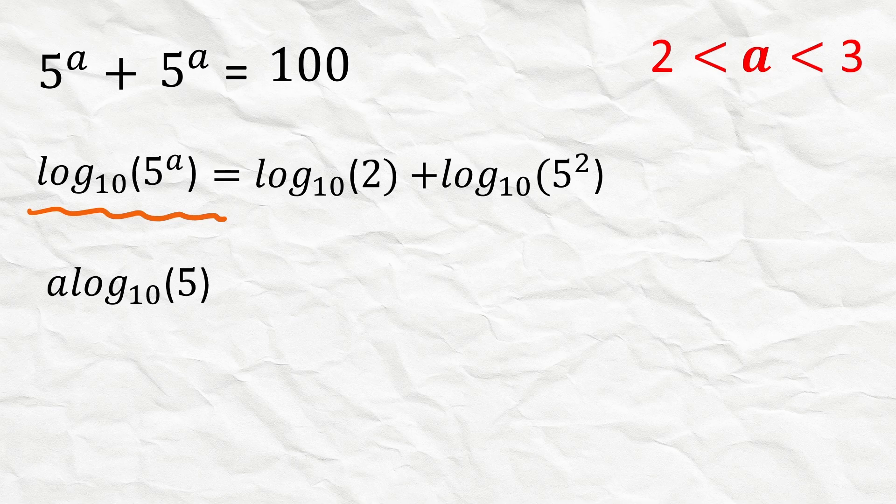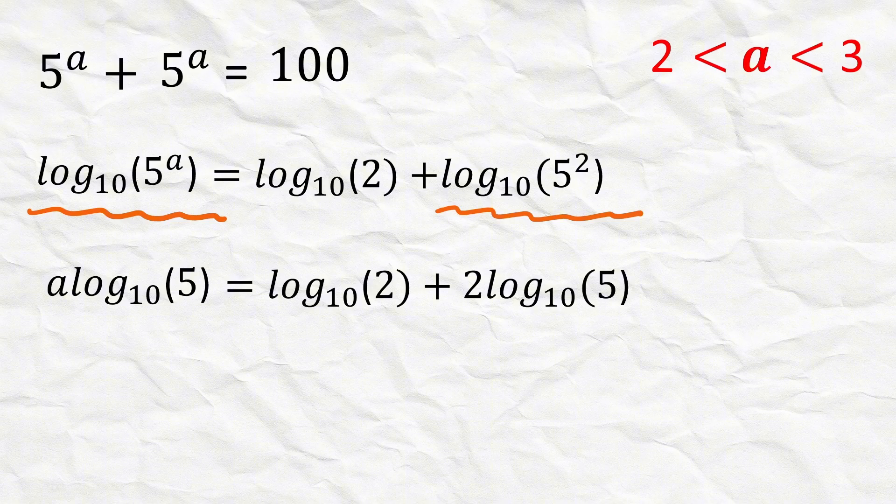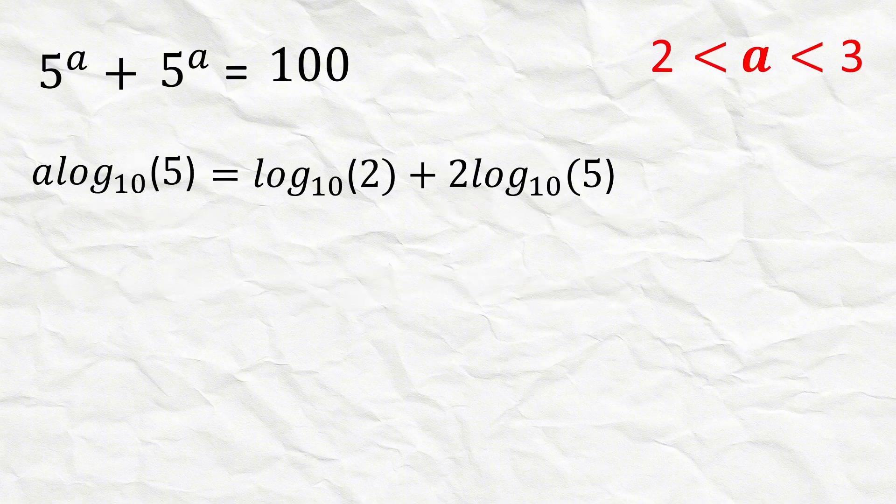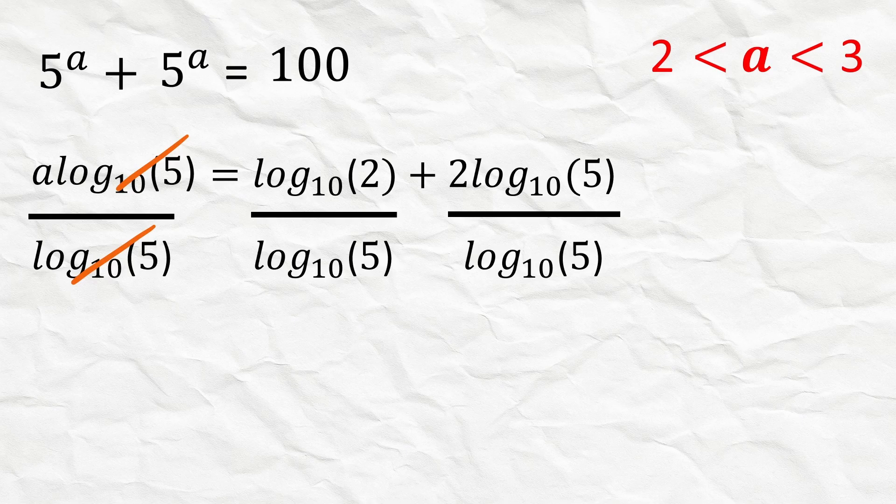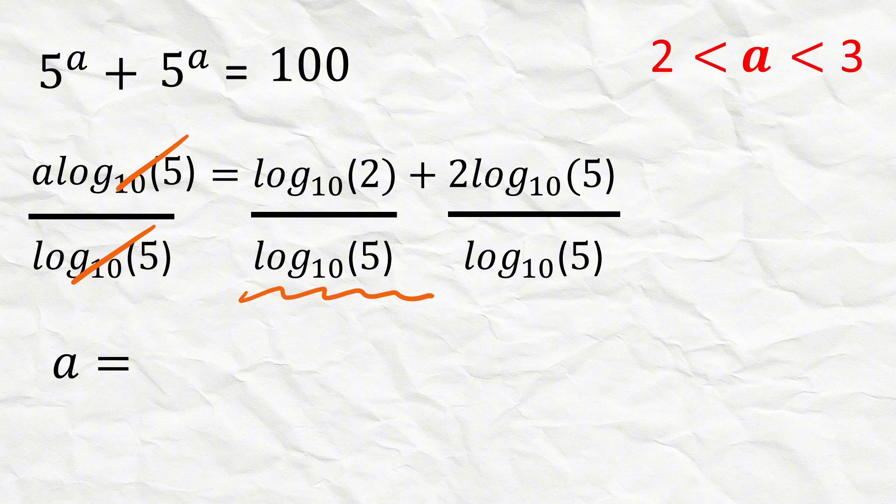And the right hand side becomes log 2 plus 2 times log 5. Now divide both sides by log 5. This will cancel out on the left and we are left with a. On the right hand side we get log 2 over log 5 plus 2.